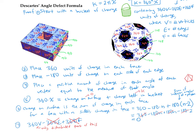So look at what we figured out. We have that 360 times the Euler number — the amount of charge we started with in the bucket — equals the charge distributed on the surface, which is a net charge of zero, plus the charge left in the bucket, which is exactly the total angle defect or total curvature. We have proved that the total angle defect is 360 times the Euler number.